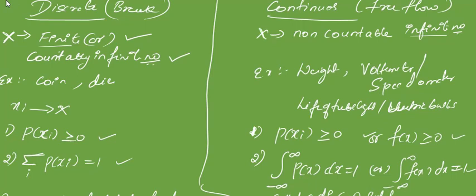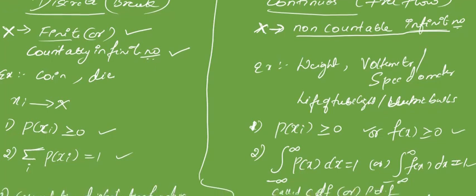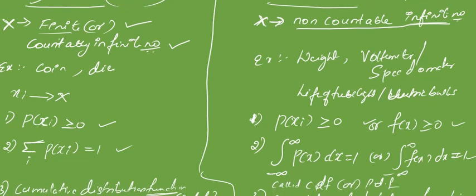For a continuous random variable, you have a random variable X where the outcomes are non-countably infinite — we will not be able to count the outcomes as they can tend up to infinity. An example of discrete is tossing a coin or throwing a die, where the process has a break from one trial to another. For continuous random variable, there is no break in the experiment — it is a continuous process.